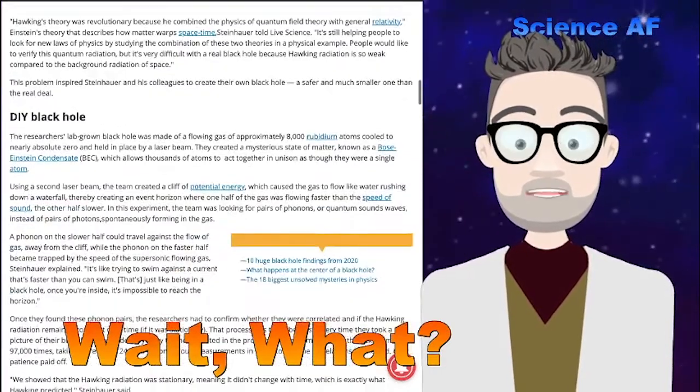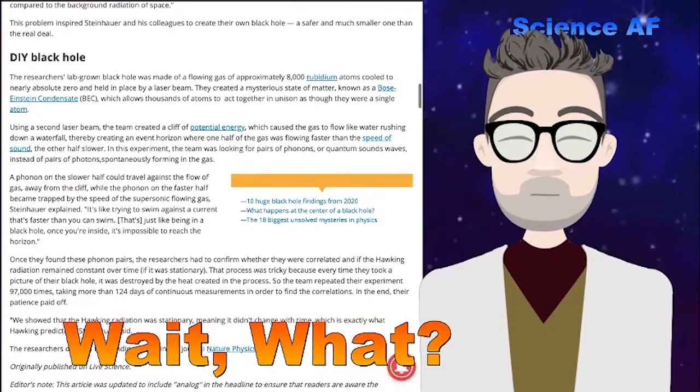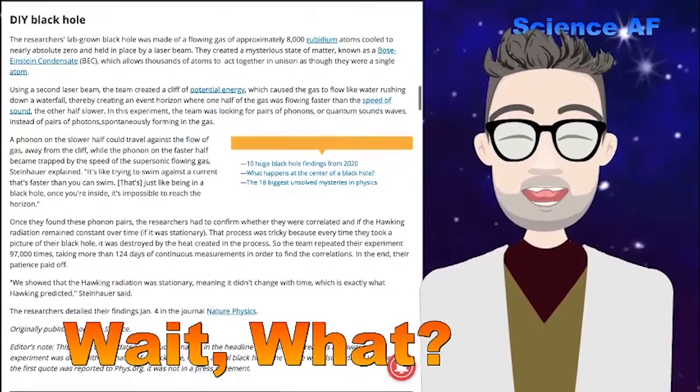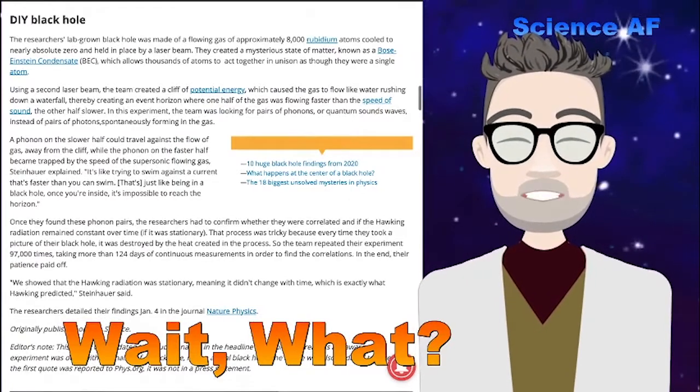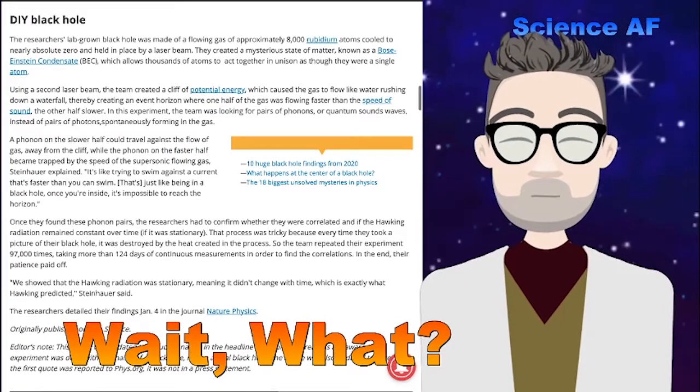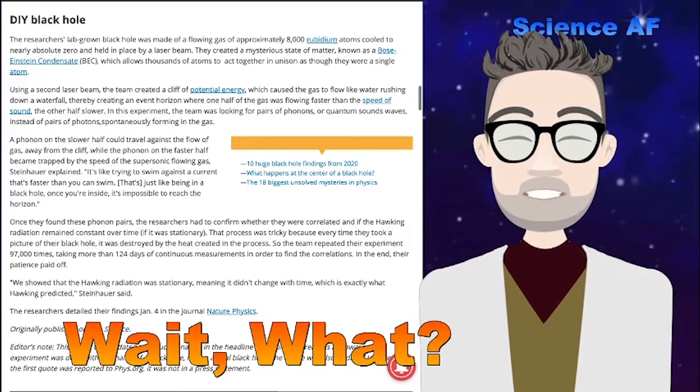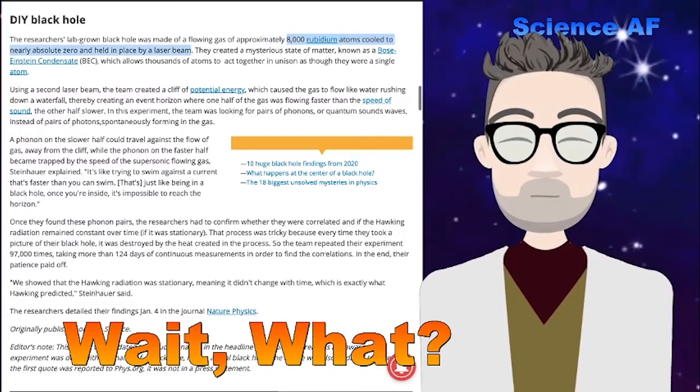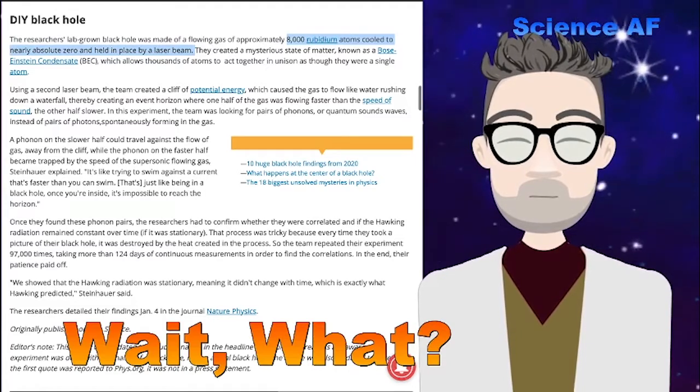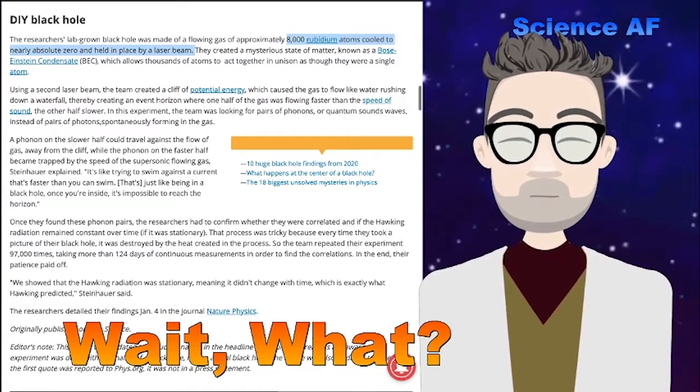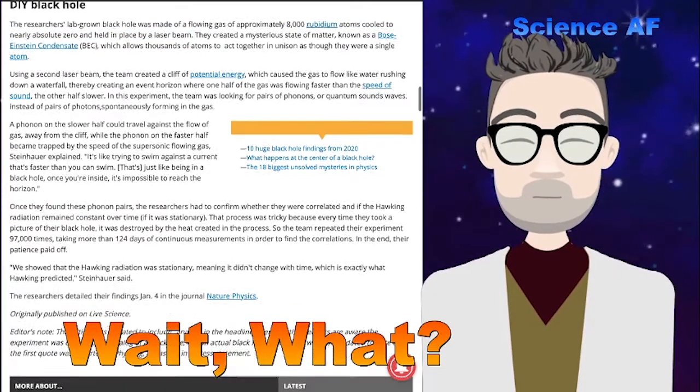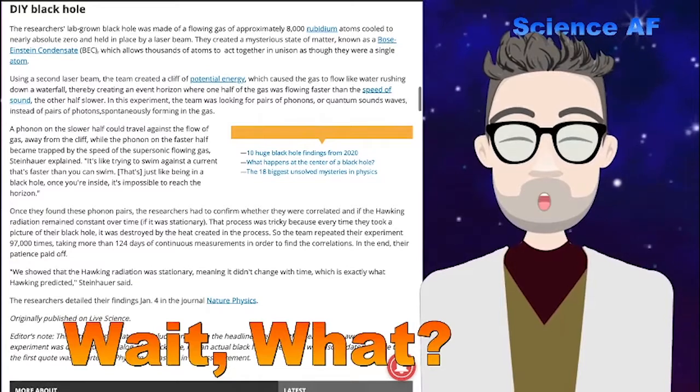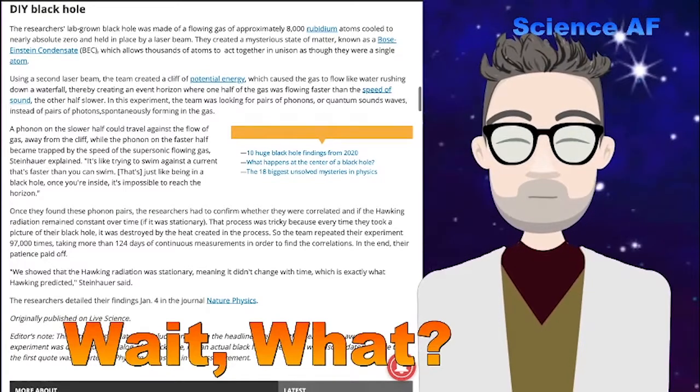So researchers have put together a black hole analog, which was sort of like, okay, here's 8,000 rubidium atoms, cooled to near absolute zero and held in a laser beam. Pretty cool. So they have these atoms all in a very low energy state, squished together. And they go into a state of matter known as the Bose-Einstein condensate, or Beck.